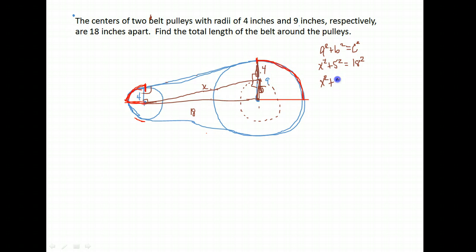So I get x² + 25 = 324. I'm going to subtract 25 from both sides. I get x² = 299. Take the square root of both sides and I get 17.29.